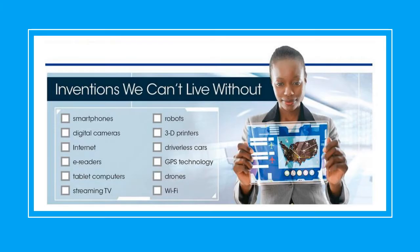Inventions we can't live without. These are things or inventions that people didn't have in the past, but now they do. Before, they didn't need them, but now they cannot live without them. They cannot stop using these inventions. The first one is the smartphone. Smartphones are very useful nowadays. People use them to send messages, to record videos, to watch videos and TV shows, and to take classes online.